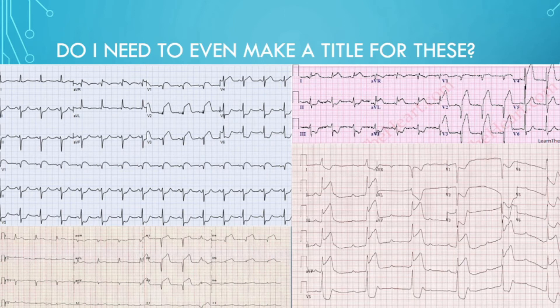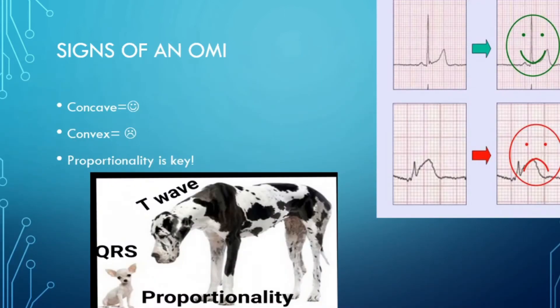For signs of an occlusion MI, here are key things to look at on a 12-lead. T waves are supposed to be upright in all leads except AVR and sometimes V1. Inversion in AVL can indicate an inferior MI. AVL's best friend is lead 3 and vice versa — these are the most reciprocal leads to each other.